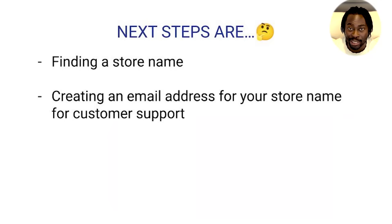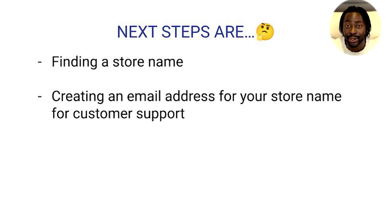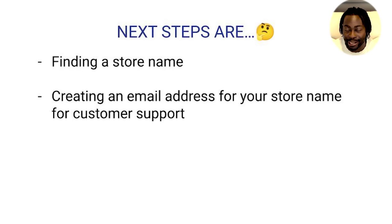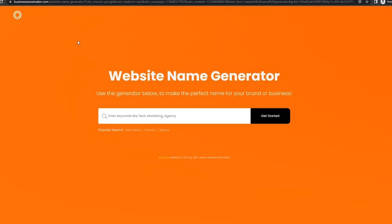After you've found some products that meet the criteria — that wow factor with problem-solving ability, or that wow factor with a passionate audience — the next step is to find a store name. I'd preferably do a general store name because you can literally sell anything in any niche on a general store domain. Just go to businessnamemaker.com, enter keywords, and they'll generate good names that are free and available. For example, type something like 'Oasis' and a bunch of names will pop up. Then click the .com to open GoDaddy and see if it's available.